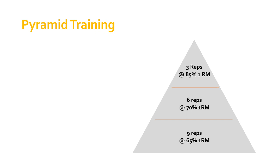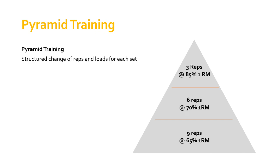In terms of pyramid training, what you'll notice is that the number of sets remains the same — we've still got three sets — but in terms of reps and load, things have changed compared to the standard training format. This is what we know as pyramid training. Essentially, there's a structured change of reps and loads for each set, whereas in the previous example each set was identical. We're deliberately doing this in order to provoke certain strength adaptations.